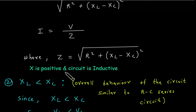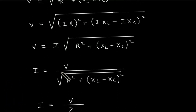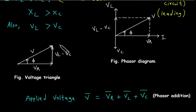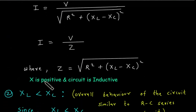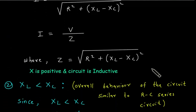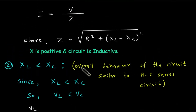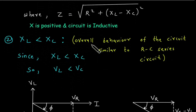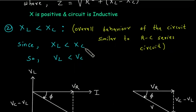In case of XL greater than Xc, X is positive and the circuit is inductive. For the second condition, when XL is less than Xc, the overall behavior of the circuit is similar to an RC series circuit. Since XL is less than Xc, the voltage drop across the inductor will be less than the voltage drop across the capacitor.